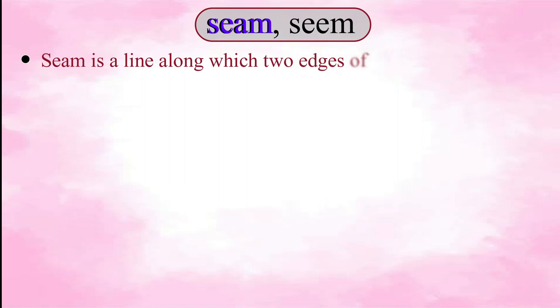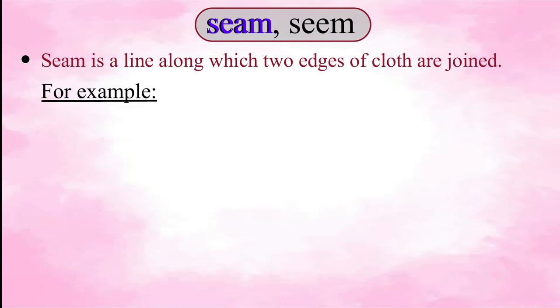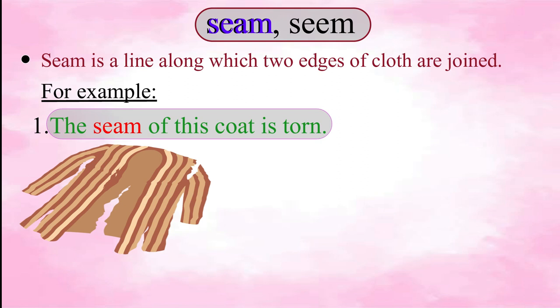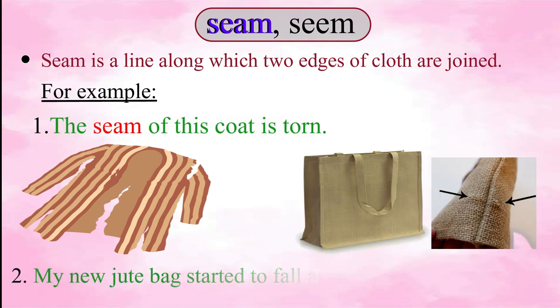The next set of words is 'seam', S-E-A-M, and 'seem', S-double-E-M. The pronunciation of these two words is the same but the meanings are different. S-E-A-M 'seam' is a line along which two edges of cloth are joined. For example: 'The seam of this coat is torn.' 'My new jute bag started to fall apart at the seams.'